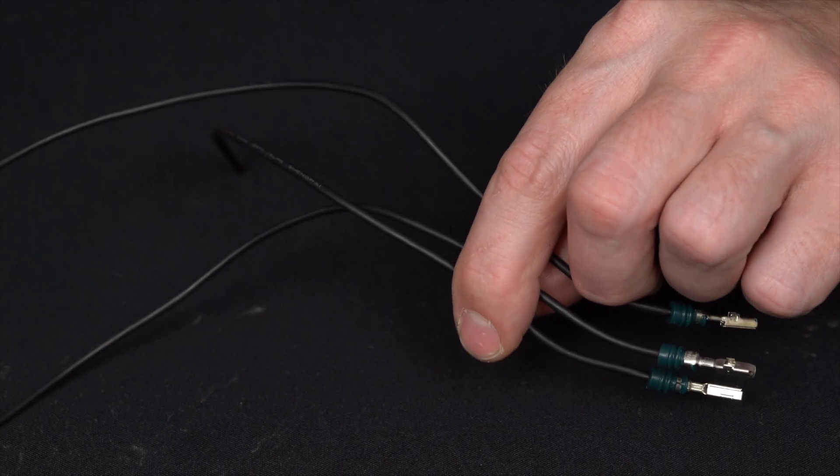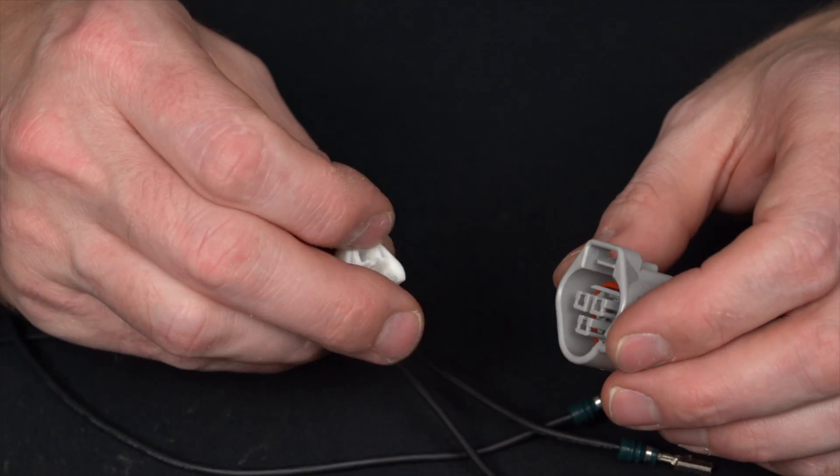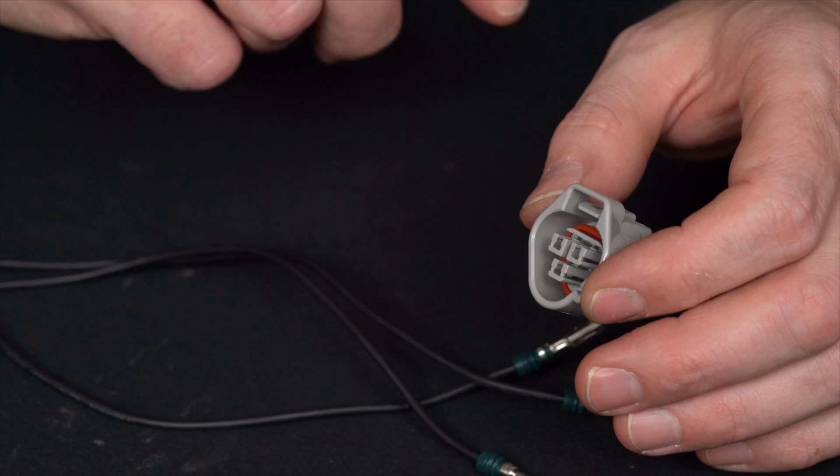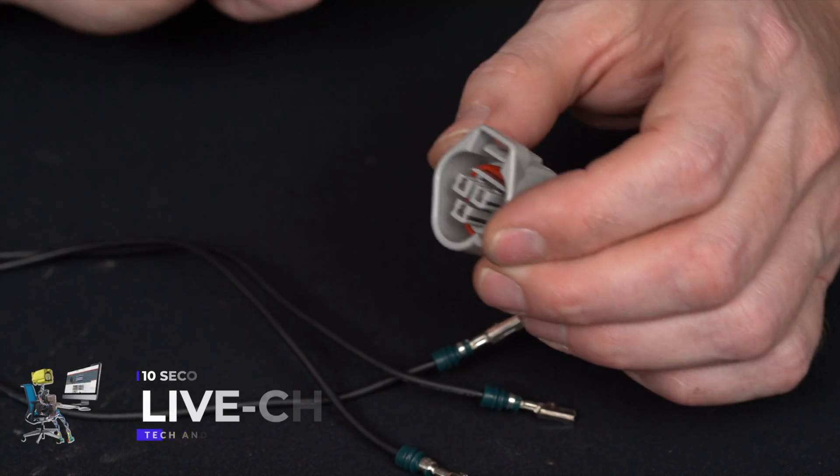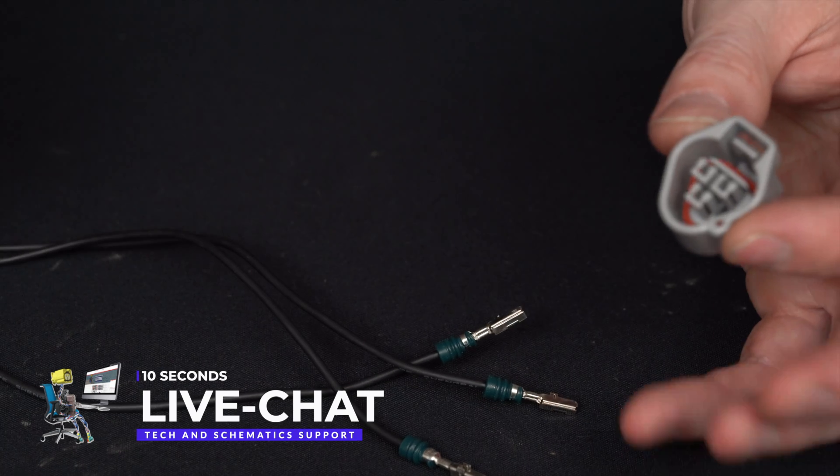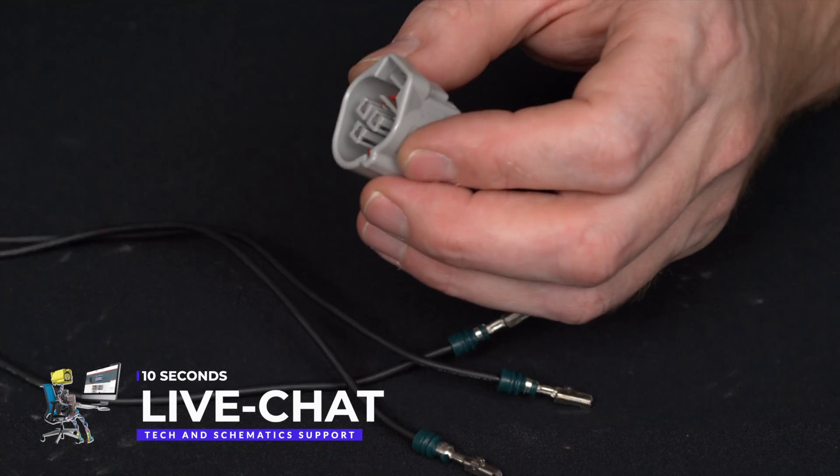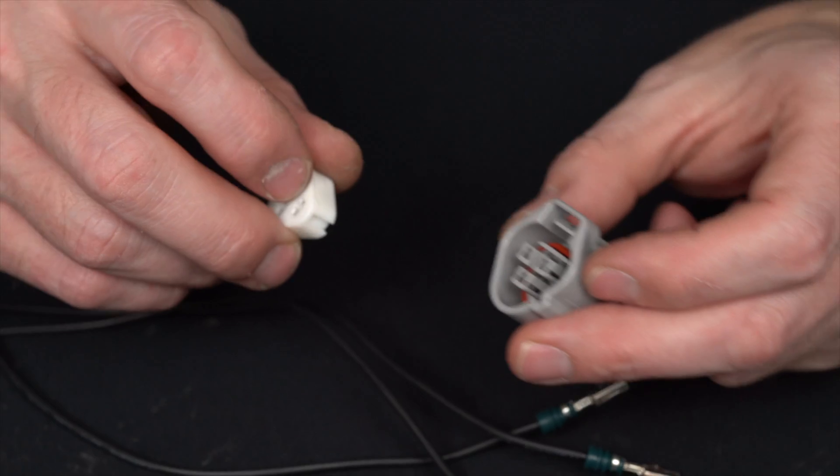You would have to de-pin the factory wires out of that connector on the car that's damaged to install them into our connector. Of course do that one at a time so that way you can make sure that you get your pin placement correctly.